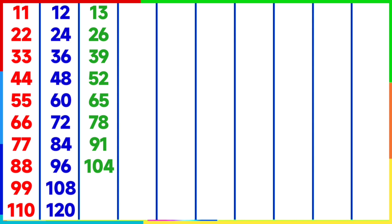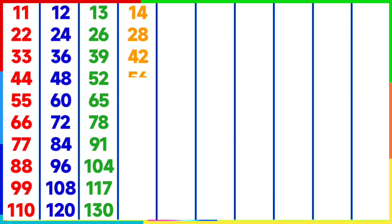13 eights are 104, 13 nines are 117, 13 tens are 130. Table of 14: 14 ones are 14, 14 twos are 28, 14 threes are 42, 14 fours are 56, 14 fives are 70, 14 sixes are 84, 14 sevens are 98.